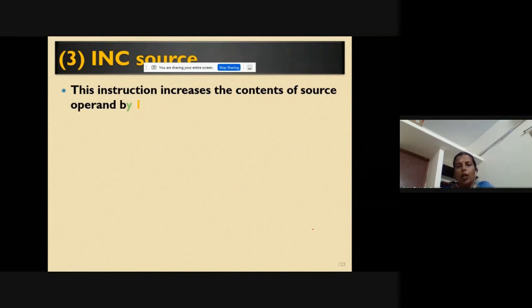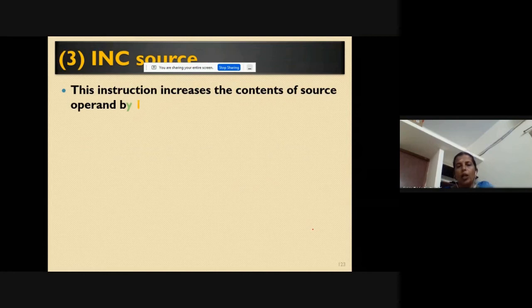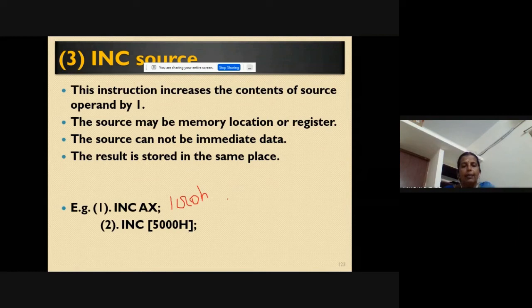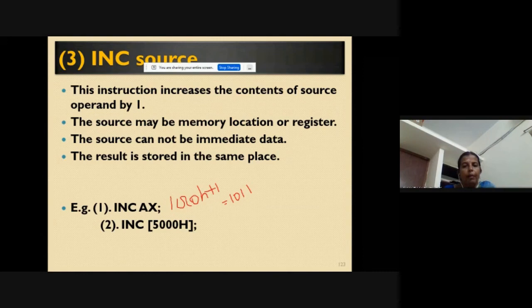Next we go to the increment instruction — INC. It is also part of addition operations. Whatever value you have on the source, it is incremented by one. For example, if AX is 1010h, then INC AX gives 1011h, because incrementing is adding one — so 1010h plus 1 equals 1011h.